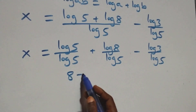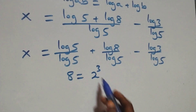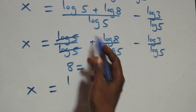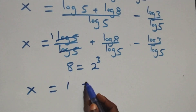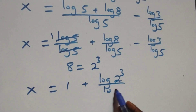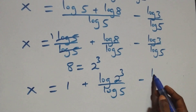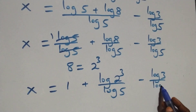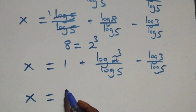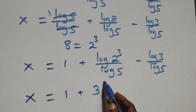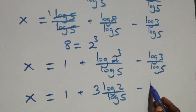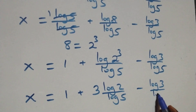Now 8 can be expressed as 2 times 2 times 2, that is 2 cubed. Log 5 over log 5 cancels to give 1, so we have x equals 1 plus log(2 raised to power 3) over log 5 minus log 3 over log 5. Applying the power log rule, 3 comes down: x equals 1 plus 3 log 2 over log 5 minus log 3 over log 5.